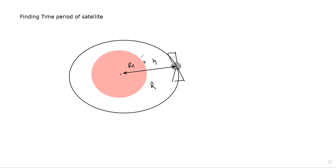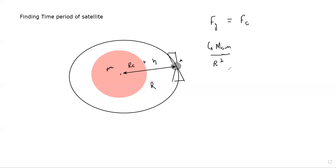According to Newton's law of gravitation, the gravitational force exists between them. Because the object is moving in a circular path, there is a centripetal force. So two forces are present: gravitational force Fg and centripetal force. The gravitational force is equal to G times mass of Earth times mass of satellite m, divided by r squared. The centripetal force is equal to mv²/r or mrω².